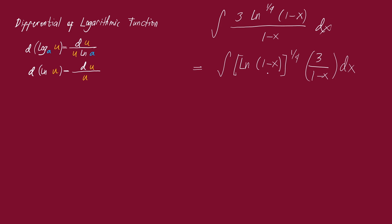I'm writing this to isolate the logarithmic function to see that the exponent is one-fourth. So our n is one-fourth, and our u is the natural logarithm of (1 minus x). You can solve for du of this function: du of ln(1 minus x) equals the derivative of (1 minus x), which is negative dx all over (1 minus x). So this is our value for du.